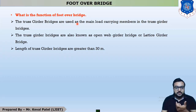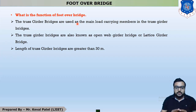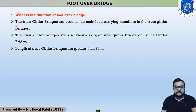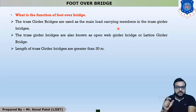No vehicle movement is allowed on a foot over bridge, because the name specifies foot over bridge, in which only pedestrians are allowed. These foot over bridges are made up of steel structures. Recent foot over bridges are designed on a river front. Whenever you have to transfer from one end to another end, you can use a foot over bridge.